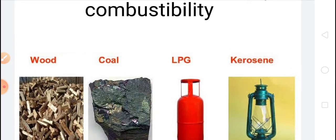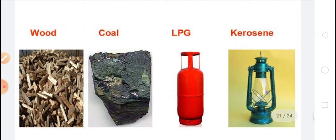Now the next property: combustibility. Combustibility means the property of substances that measures their capability of burning or igniting. It is a chemical property. Materials that burn easily are called combustible materials, and materials which do not catch fire easily are called non-combustible materials. Examples of combustible materials are wood, coal, liquid petroleum gas, and kerosene — they are easily flammable.